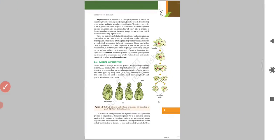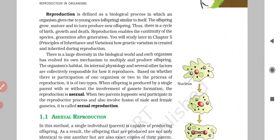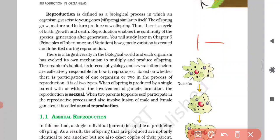So let's get to the next page. Here reproduction - so reproduction, what is the definition? Reproduction is defined as a biological process in which an organism gives rise to young ones similar to itself. One organism will give rise to another organism.